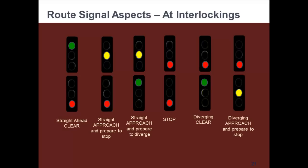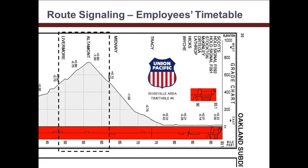Route signaling is used in the western part of the U.S. The signals at interlockings typically have two heads: the top head for a straight-through move and the bottom for diverging moves. For example, green-red means straight ahead and clear. These signals only tell the train whether to go straight or to diverge — they don't indicate the allowed speed. For route signaling, speed limits are indicated in the employee's timetable for both straight and diverging routes.